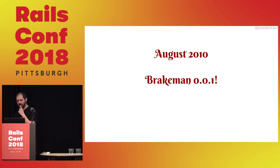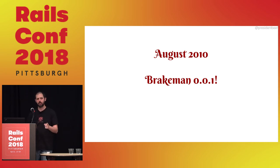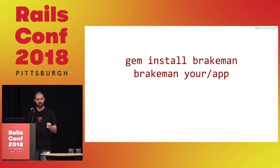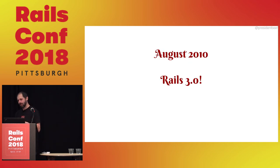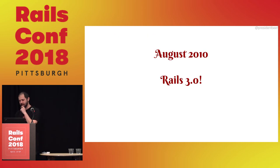August 2010, Brakeman 0.0.1 was released. Here's the quick tutorial: install it, run it, good. A few days later, Rails 3.0 was released — so that gives you a sense of the vintage.